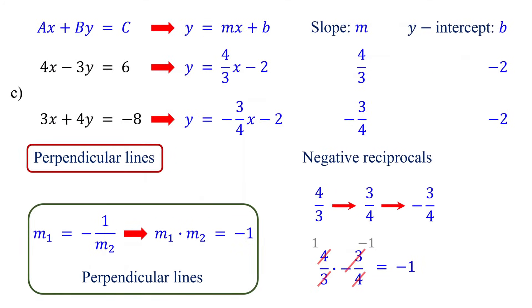Note that for perpendicular lines, the y-intercepts can be either the same or different. As long as the product of the slopes equals negative 1, the lines are perpendicular.